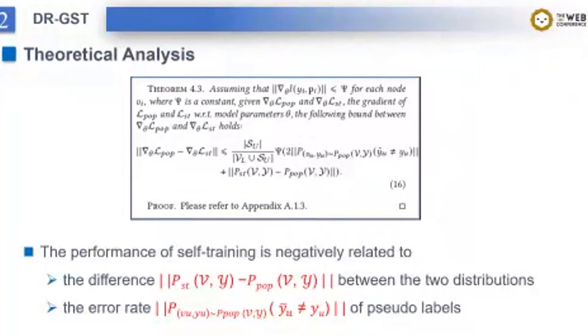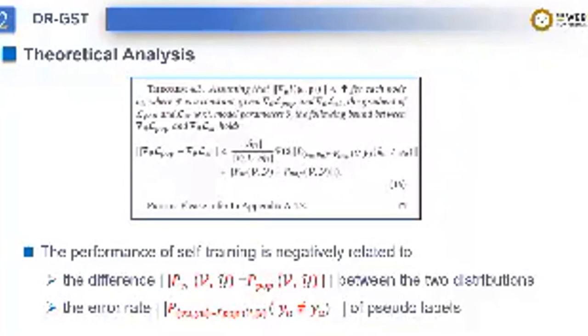We also theoretically analyze the influence factor of self-training. Conclusion shows the performance of self-training is negatively related to the difference between the two distributions as well as the average error of the pseudo labels. Exactly, both of the factors are considered in our method. The rationality of our method is guaranteed.